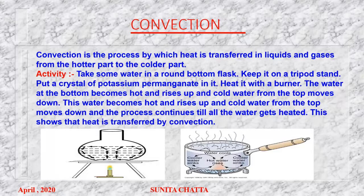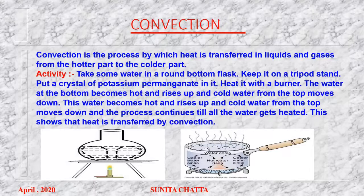Convection is the process by which heat is transferred in liquids and gases from the hotter part to the colder part. We can perform an activity to see this: take some water in a round bottom flask, keep it on a tripod stand, put a crystal of copper or potassium permanganate in it, and heat it with a burner. The water at the bottom becomes hot and rises up and the cold water from the top moves down. This process continues till the water gets heated, showing that heat is transferred by convection.